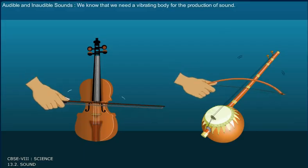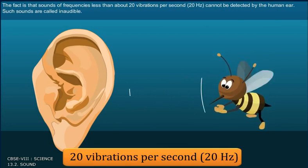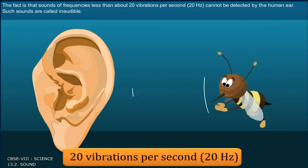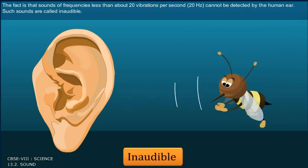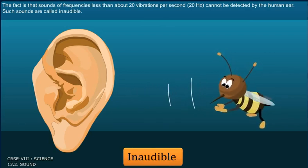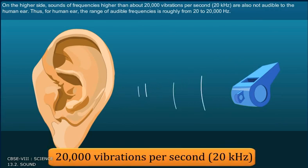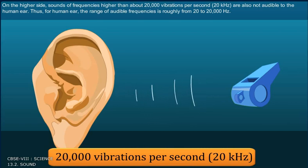Audible and inaudible sounds. We know that we need a vibrating body for the production of sound. Sounds of frequencies less than about 20 vibrations per second, that is 20 Hertz, cannot be detected by the human ear. Such sounds are called inaudible. On the higher side, sounds of frequencies higher than about 20,000 vibrations per second, 20 kilohertz, are also not audible to the human ear. Thus, for the human ear, the range of audible frequencies is roughly from 20 to 20,000 Hertz.